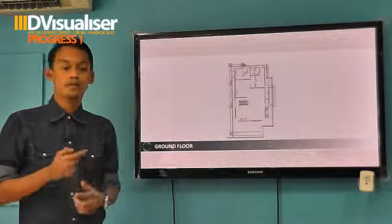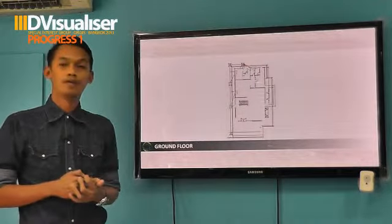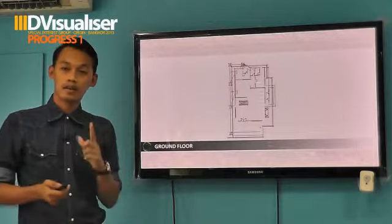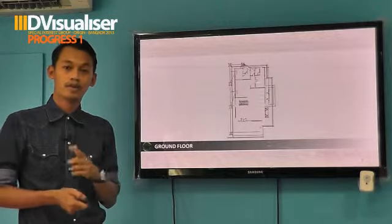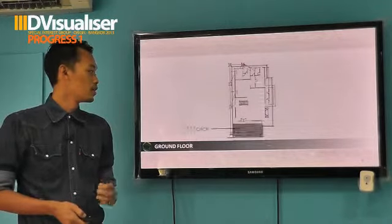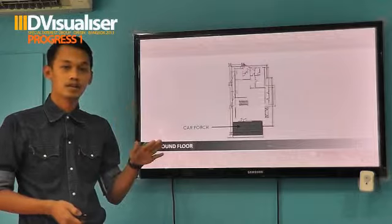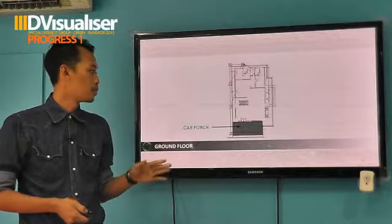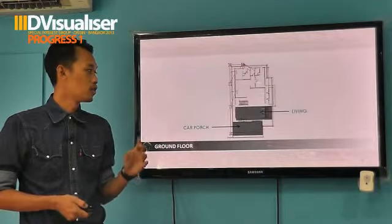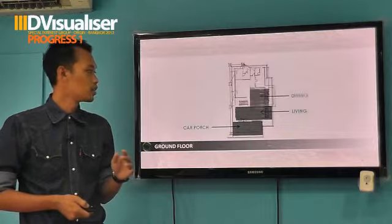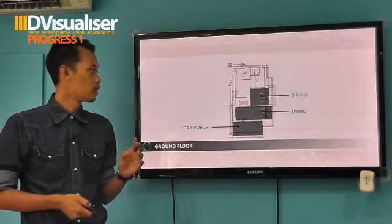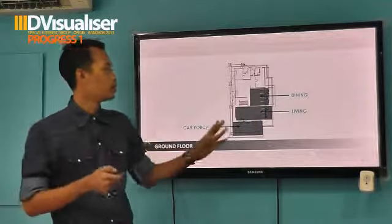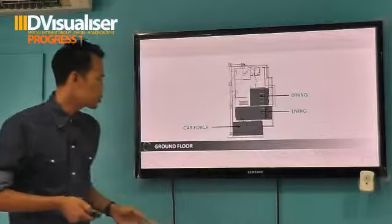I will go to the first ground floor plan. This is my ground floor plan. This is the first entrance, this is a garage, then the second one is living, the third one is landing. The dining is in front view of the swimming pool.